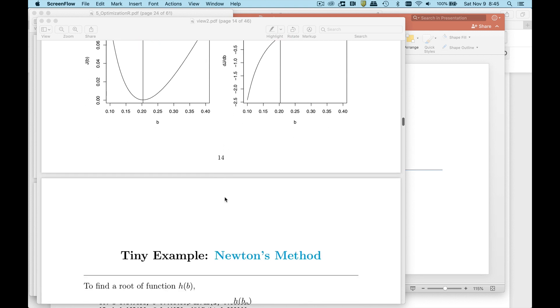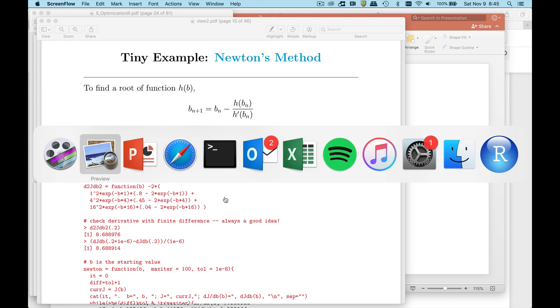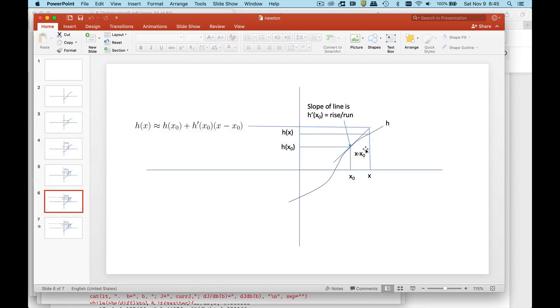So then what we did was we used Newton's method. I showed you how we could make a linear approximation of this curve. So the values close by, the curve are very close to this tangent. As you get further away it's not so good.